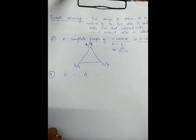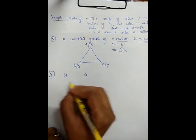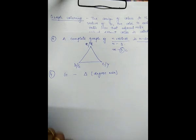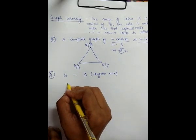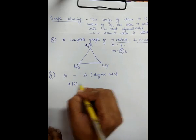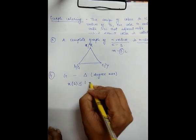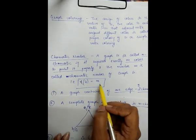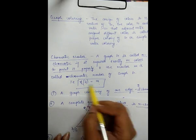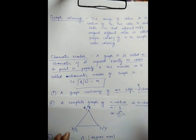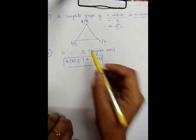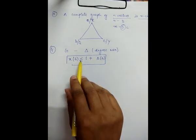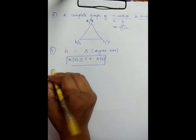The fourth observation: for any graph G having a maximum degree represented by Δ (delta), the chromatic number satisfies χ(G) ≤ 1 + Δ(G), where χ(G) is the chromatic number — the minimum number of colors to paint the graph properly — and Δ(G) is the maximum degree of G.